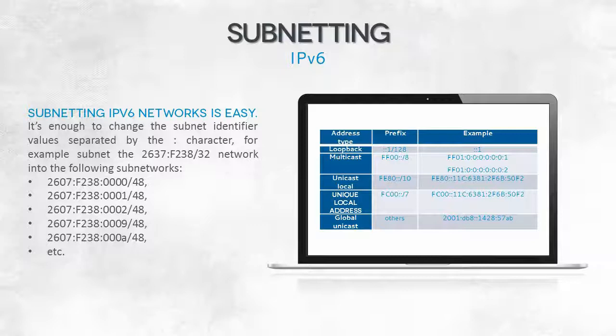To divide a network into subnets, you only need to adjust these bits by typing, for example, 0000, then 0001, and so on.